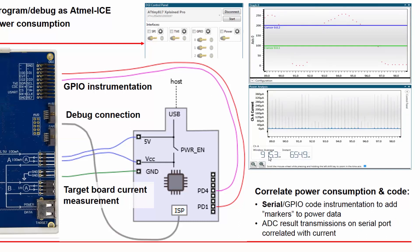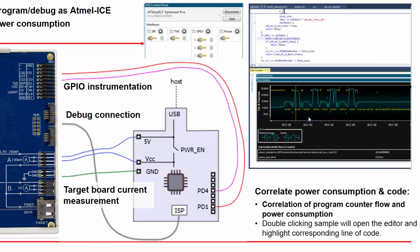In this example I'm showing a serial correlation, using an ADC result put on the COM port. You can see the current spikes associated with every UART transmission of an ADC sample. Finally, I'm showing the correlation of program counter flow and power consumption — double clicking a sample will open the editor and highlight the corresponding line of code.